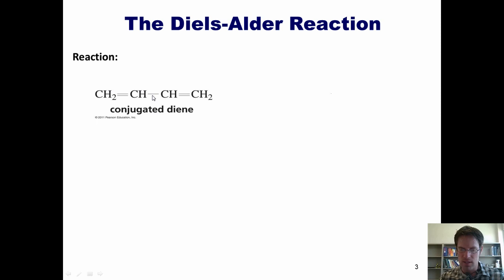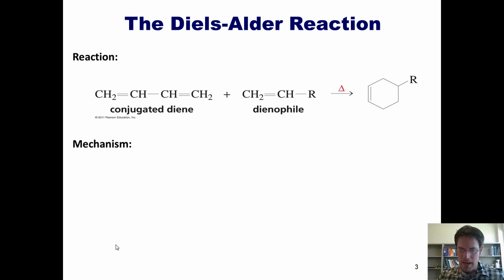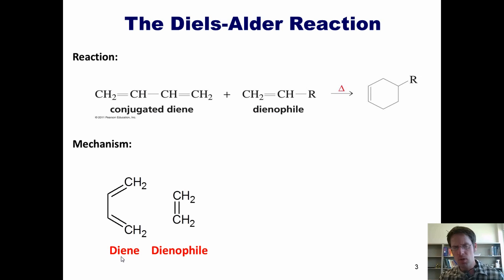To summarize: in a Diels-Alder reaction, a conjugated diene interacts with an alkene — which we call a dienophile — to make a cyclohexene. I'll now explain this reaction's mechanism, just so you know how this transformation actually occurs. During this reaction, our diene and our dienophile get close enough to each other that their pi electrons rearrange.